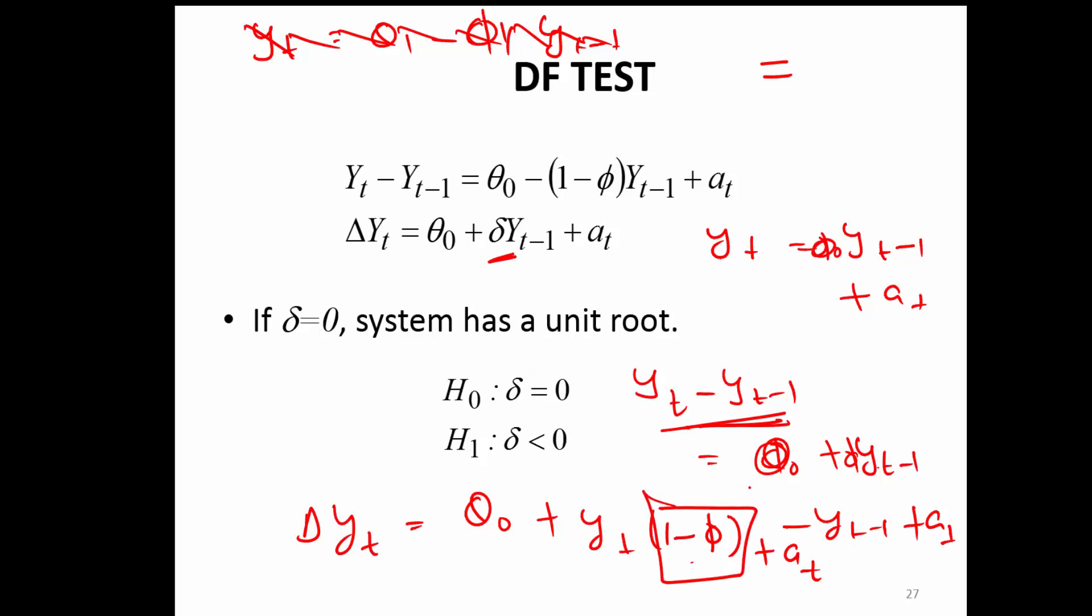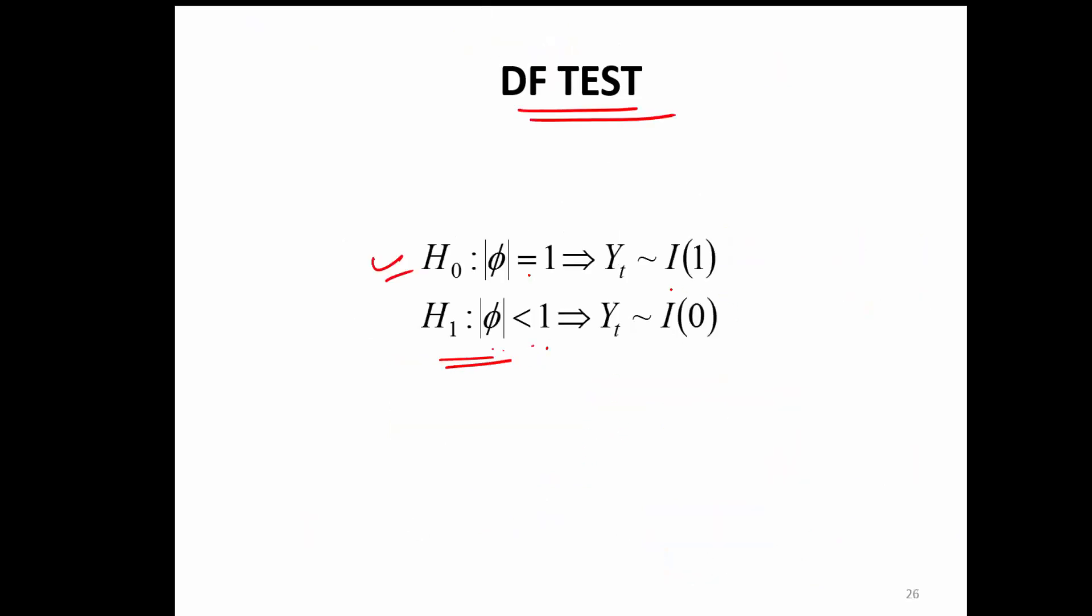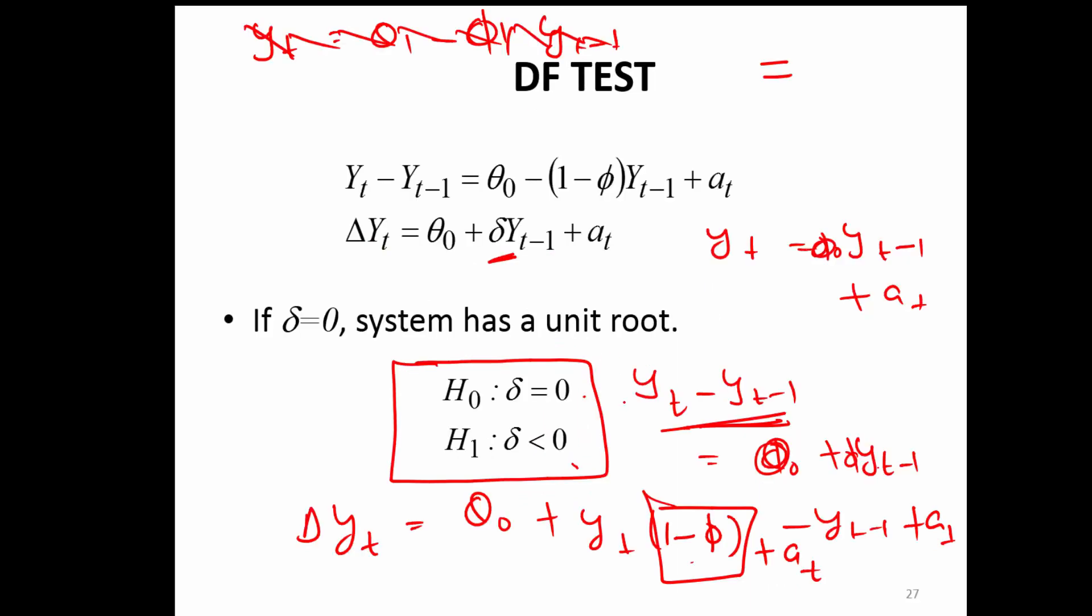It has now changed. The null hypothesis is now either it's 0 or it's less than 0. Just a slight change. Here we are comparing with 1 or less than 1, here it is either 0 or less than 0.